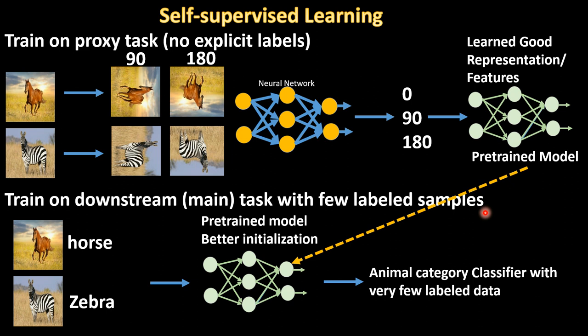Let's discuss pretext task based approaches first. As I discussed in the introductory video, a pretext task means a proxy task that you design for the model to learn from unlabeled data. You don't give explicit labels — just some proxy labels that the model can learn from. Once it learns, you can transfer it to the main task. One such proxy task is predicting the rotation, but there are many.